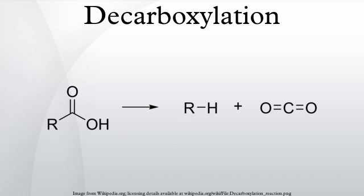In biochemistry, common biosynthetic oxidative decarboxylations of amino acids to amines include: tryptophan to tryptamine, phenylalanine to phenylethylamine, tyrosine to tyramine, histidine to histamine, serine to ethanolamine, glutamic acid to GABA, lysine to cadaverine, arginine to agmatine, ornithine to putrescine, 5-HTP to serotonin, and L-DOPA to dopamine. Other decarboxylation reactions from the citric acid cycle include: pyruvate to acetyl-CoA, oxalosuccinate to alpha-ketoglutarate, and alpha-ketoglutarate to succinyl-CoA.